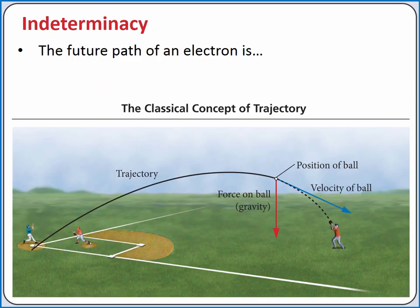In classical physics, we can know the trajectory of a particle. For example, if a baseball is hit to the outfield, the outfielder is able to position himself or herself to catch the baseball because the path of the baseball follows a classical trajectory.